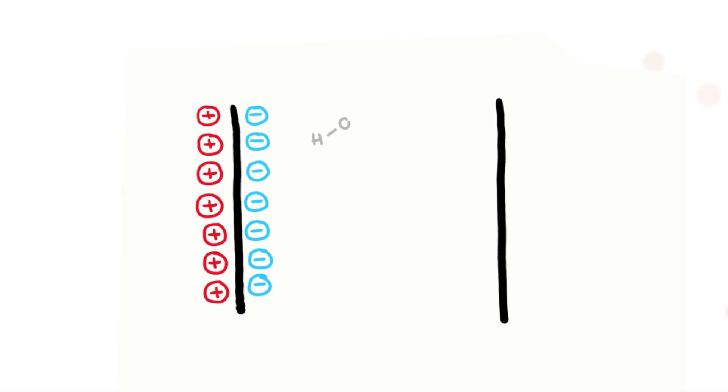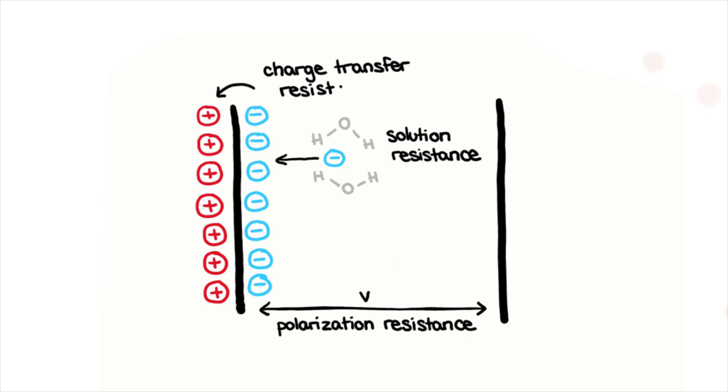In real systems, solution resistance, which is opposition to ion migration, polarization resistance, which is the resistance from applied potential, and charge transfer resistance, which is also known as the resistance from electrochemical reaction kinetics, can all be modeled as resistors. On the other hand, double layer capacitance can be modeled as a capacitor.